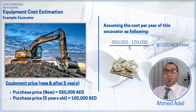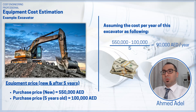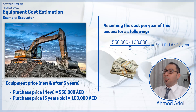Dividing 450,000 by five years means this equipment is costing me 90,000 dirhams per year. This is the first cost criterion — the equipment depreciation cost alone, without any other associated costs.